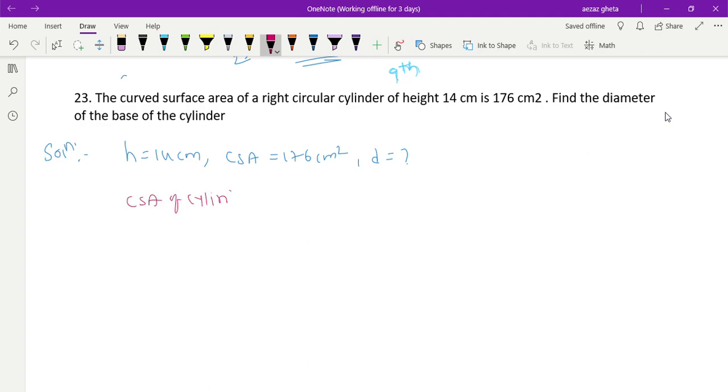What is the formula of CSA of cylinder? 2πrh, right. So 176 = 2 × 22/7 × r × 14. Radius we don't know, we have to find, and height we know is 14. Very simple.